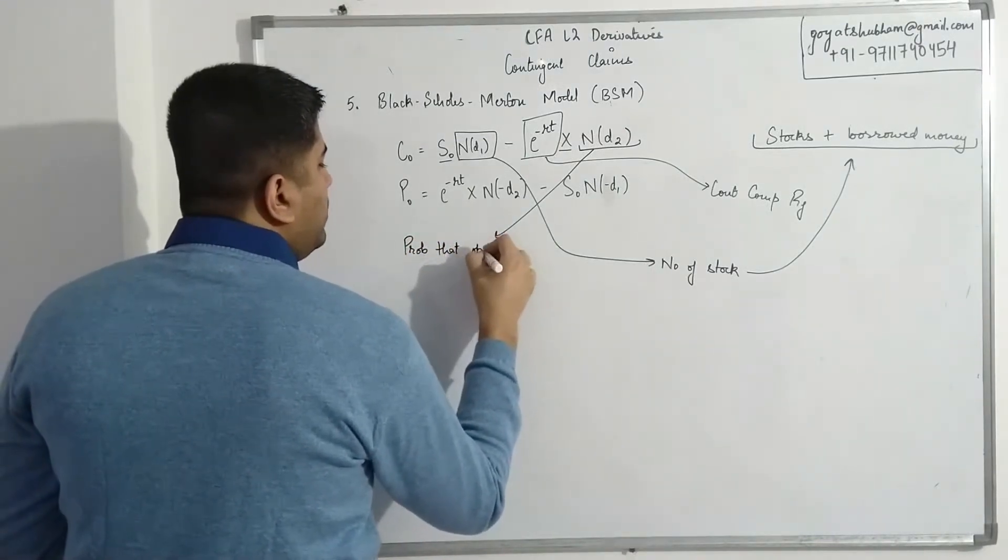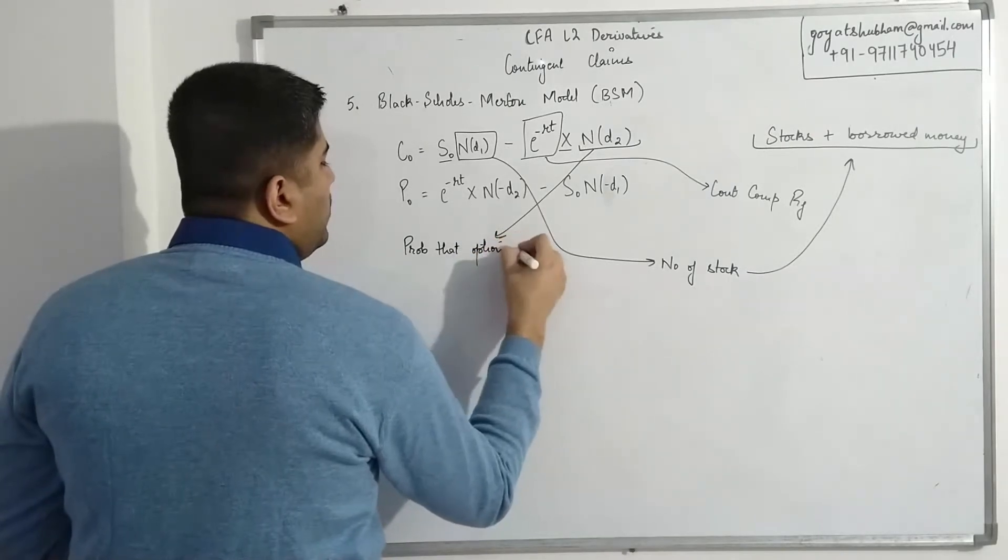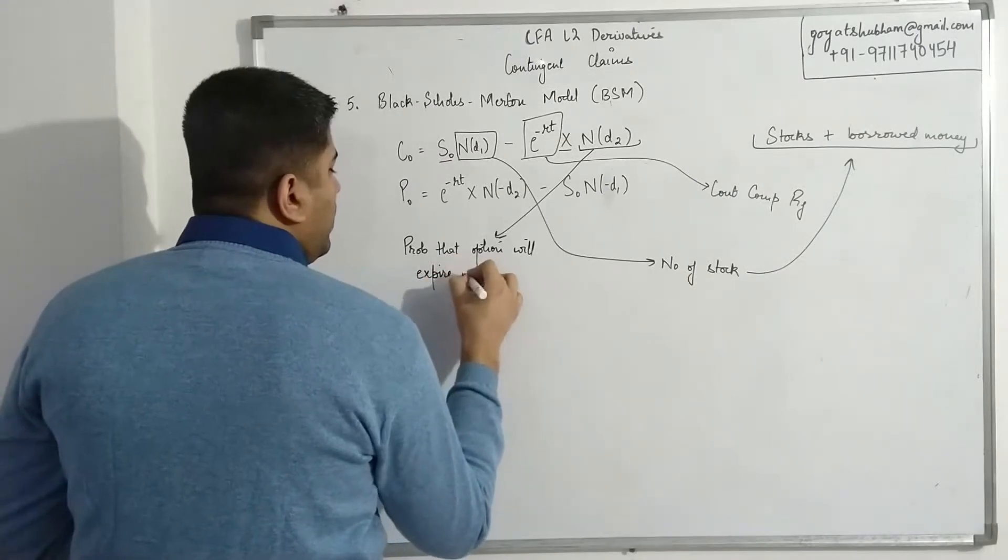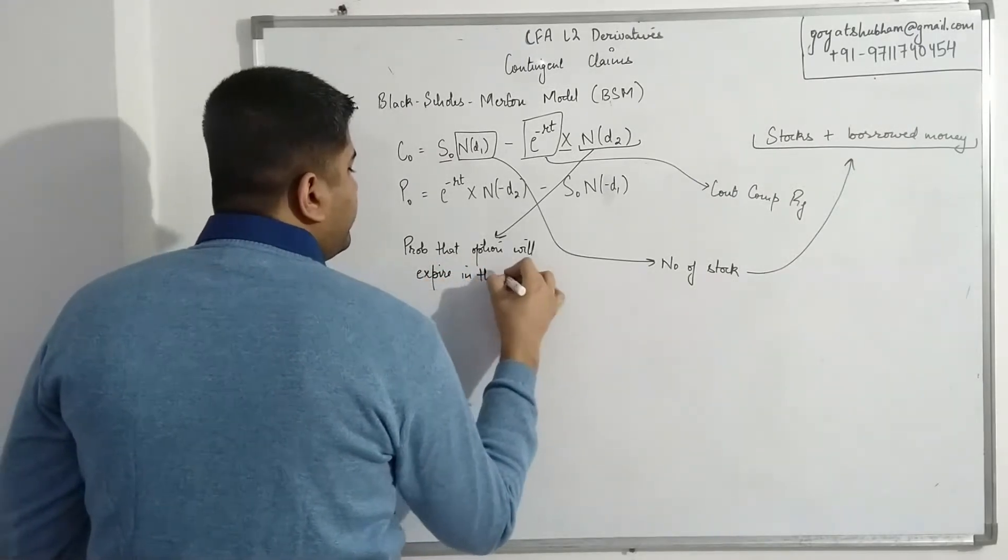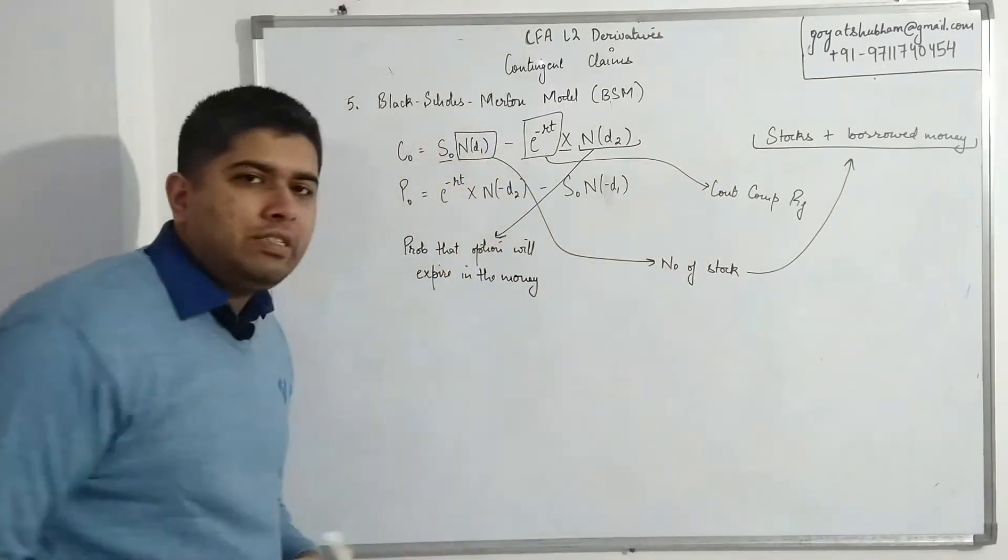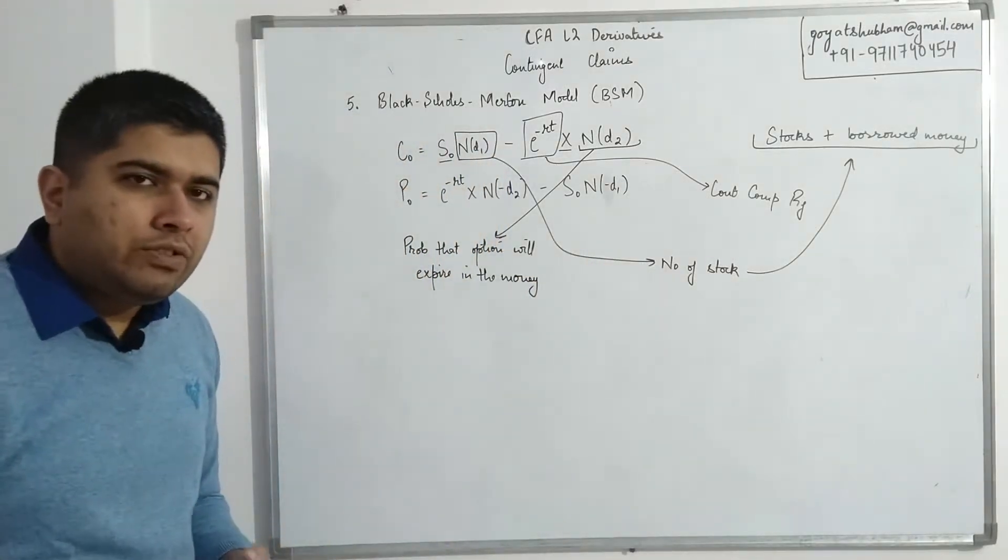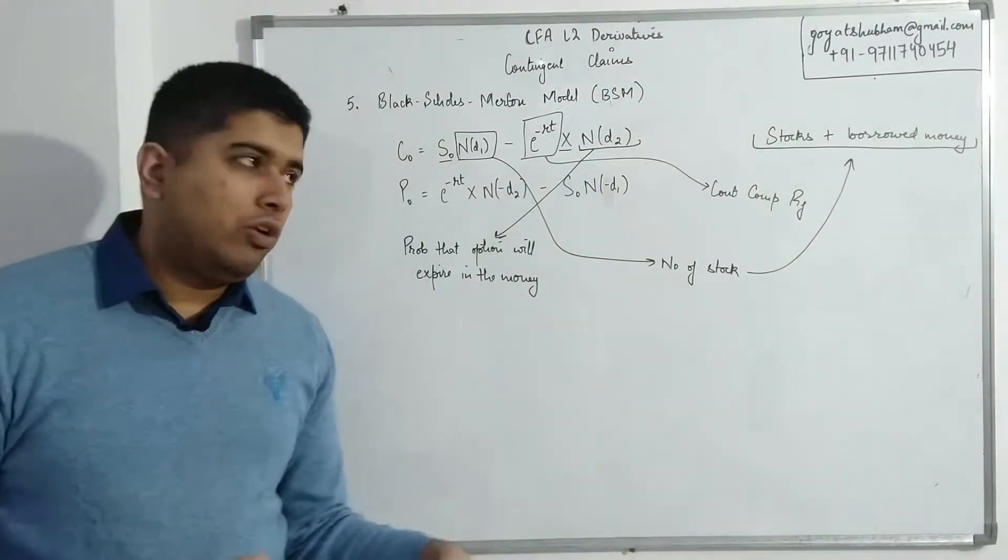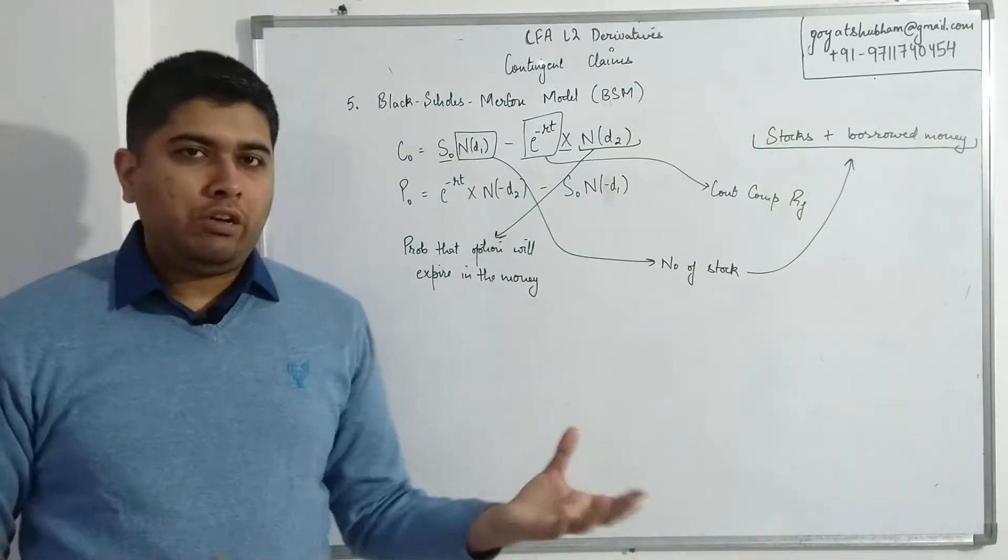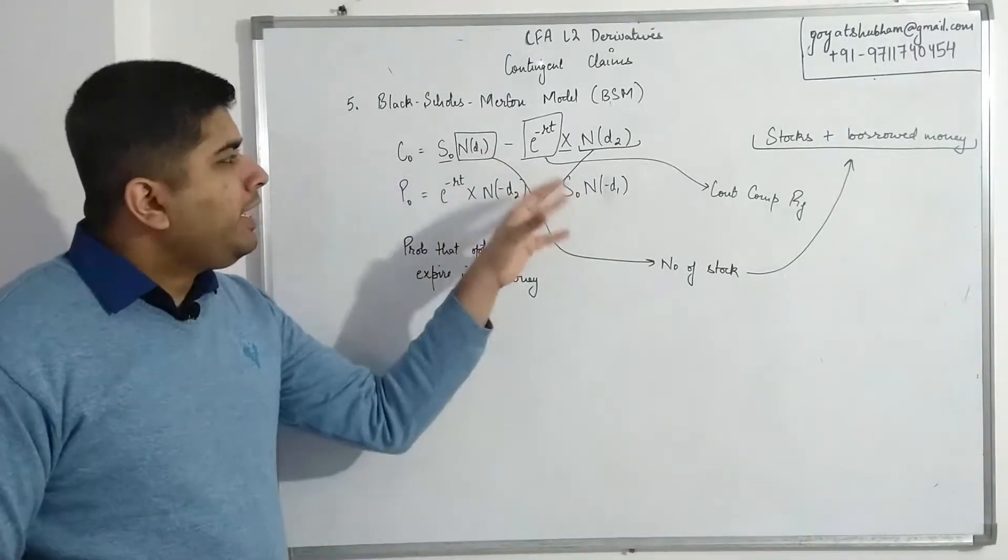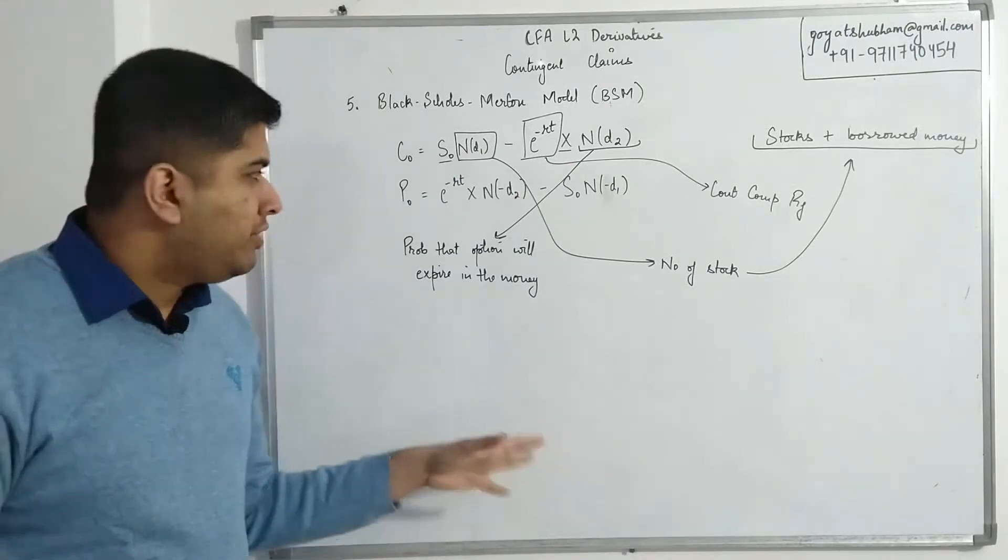N(d1) is nothing but number of stocks. N(d2)—this is the probability that option will expire in the money. This simply means what is the chances that at maturity my option will have a positive payoff. In the money simply means that it will generate some sort of payoff at the end.